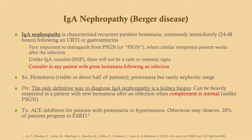Always consider IgA nephropathy in a patient with gross hematuria who is currently having or has very recently had an infection. Symptoms include hematuria and proteinuria, but rarely in the nephrotic range. Diagnosis definitively requires a kidney biopsy, though the history is very helpful. Complement is normal in IgA nephropathy — unlike post-strep GN where complement is low — which is another way to differentiate the two. If there's proteinuria or hypertension, give ACE inhibitors; otherwise observe. A notable minority do progress to end-stage renal disease.